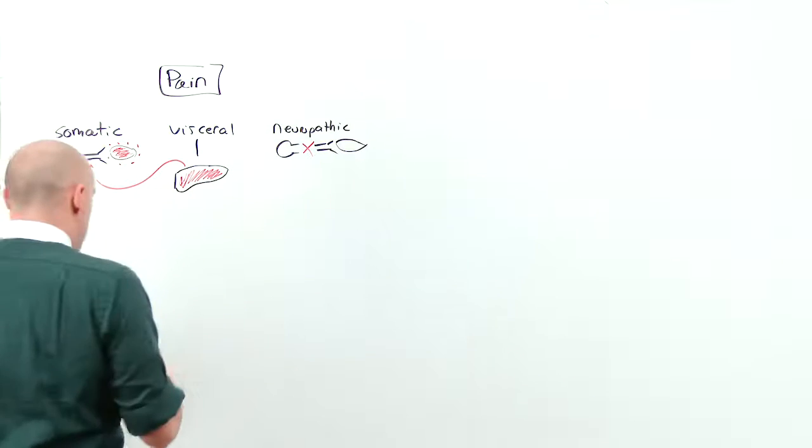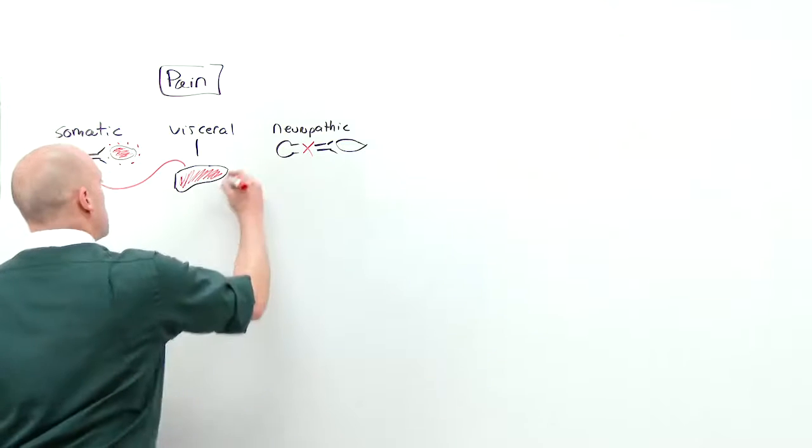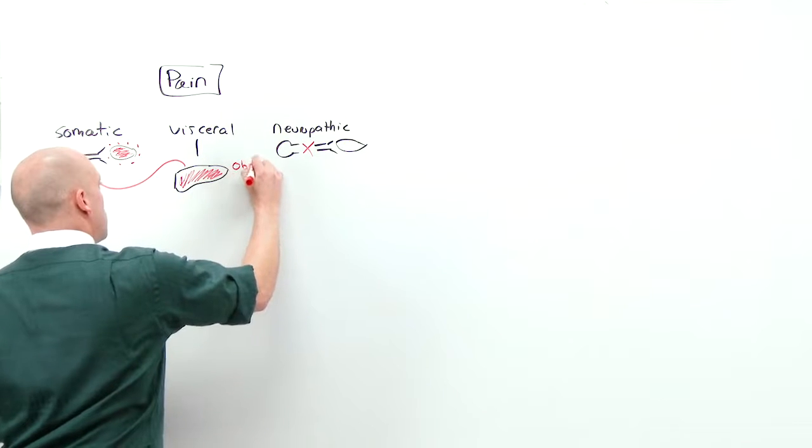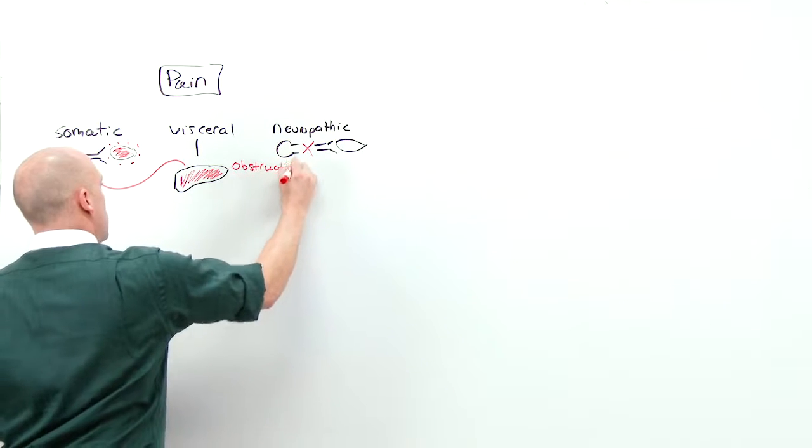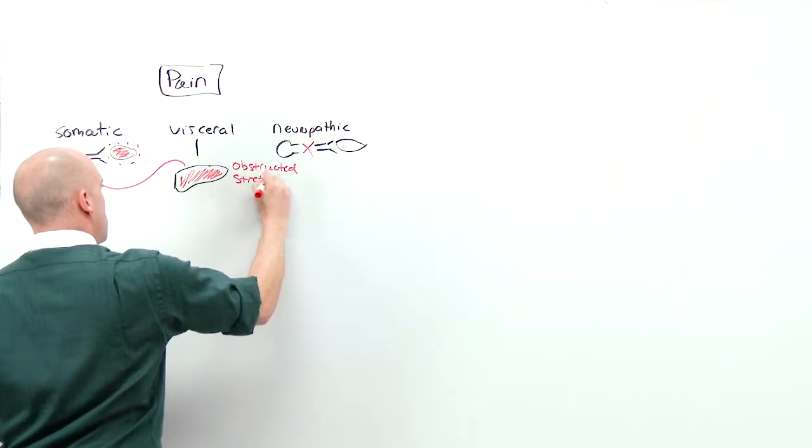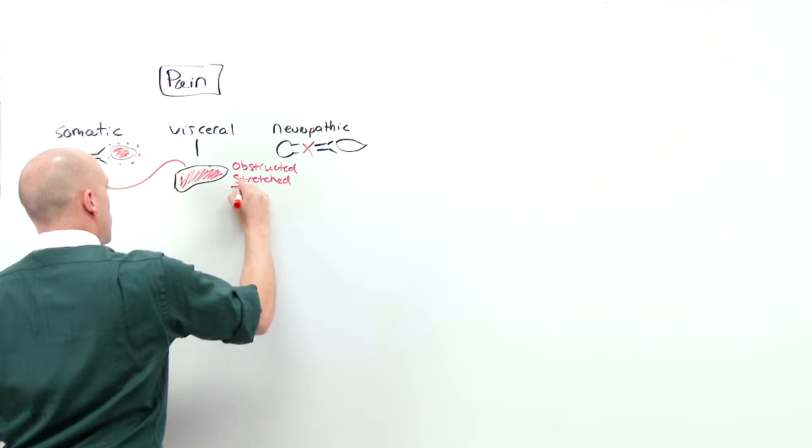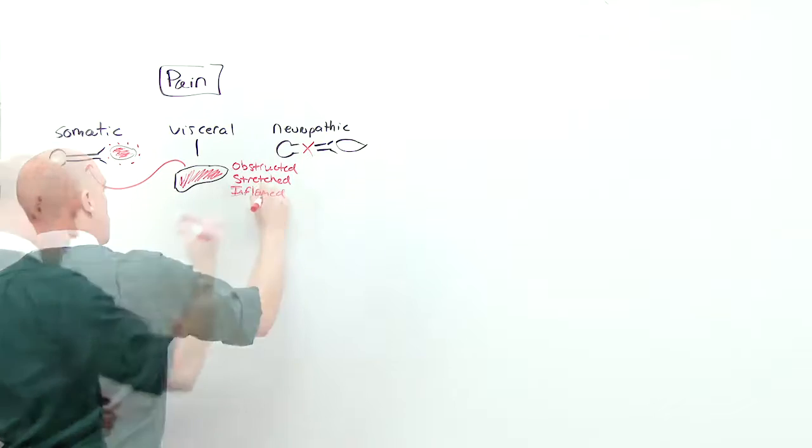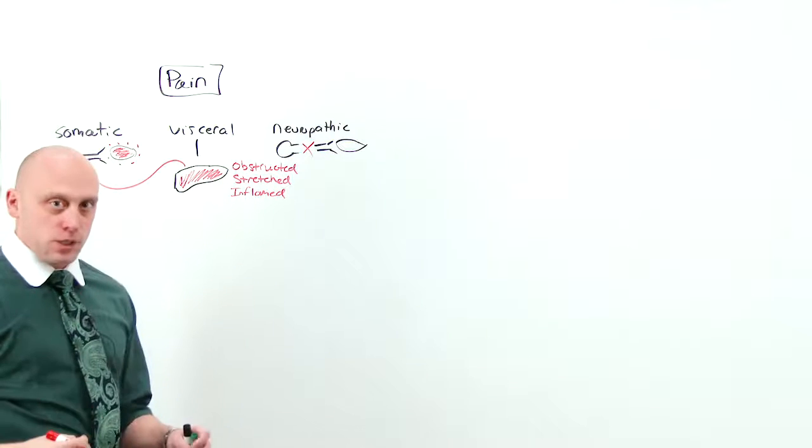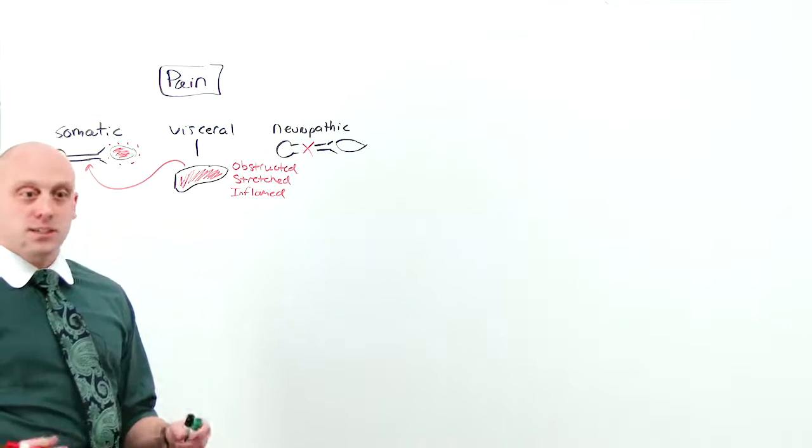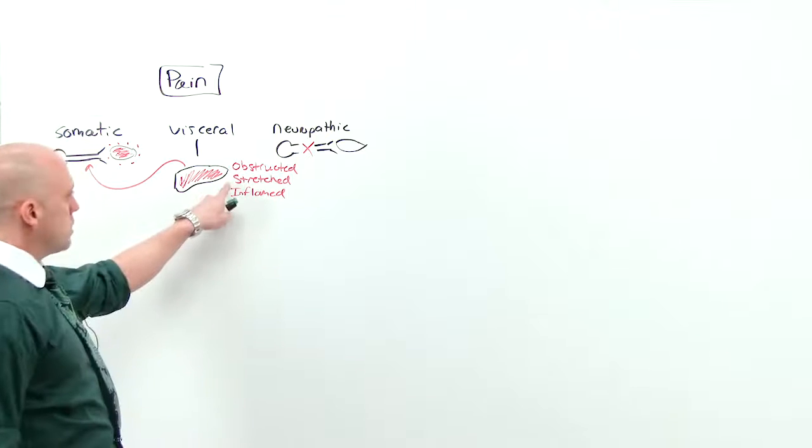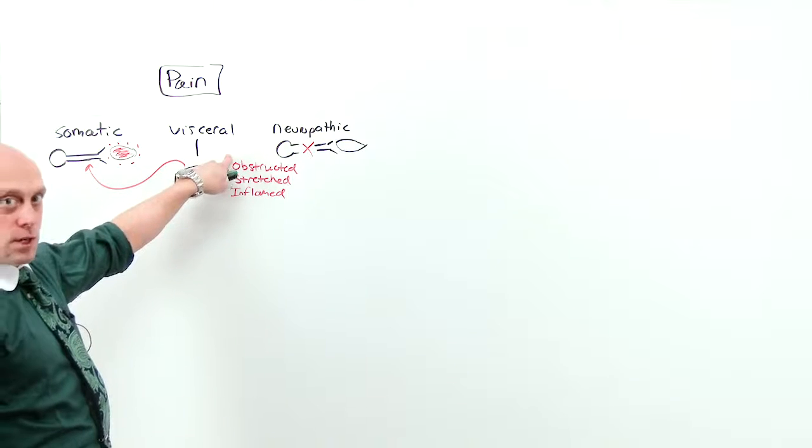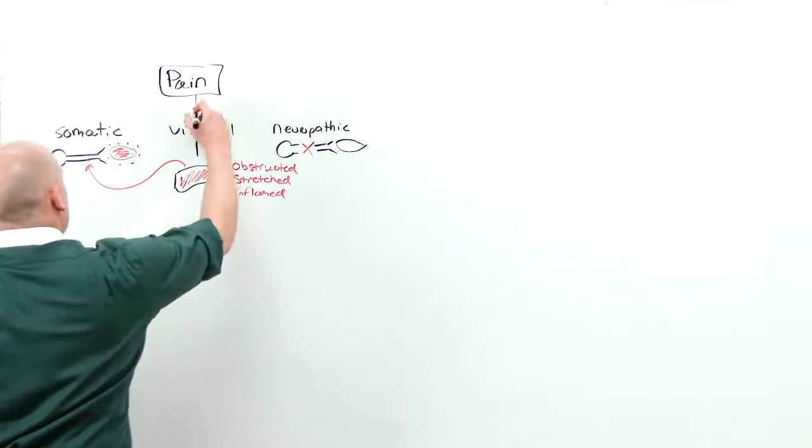Visceral organs, especially hollow ones, experience pain when they become obstructed, stretched, or inflamed. They don't feel being burned. They don't feel being cut. If there's a capsule, they get stretched. If it's a hollow viscus, they get obstructed. So these are the types of pain.